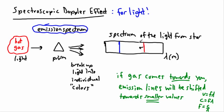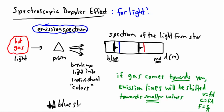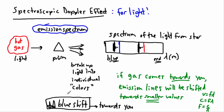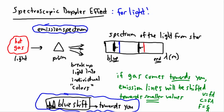If the gas was coming towards you fast and you took the same spectrum, you'd notice the same lines but they'd all be shifted towards smaller wavelengths — shifted to the left. Since smaller wavelengths correspond to blue, we call this blueshift. The key takeaway is: blueshift means the source is coming towards you. It doesn't necessarily mean things literally look bluer — the lines could shift well past blue — but we call it blueshift.